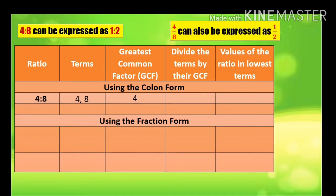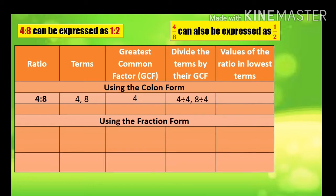Now we are going to divide the terms by their GCF. The terms are 4 and 8 and the GCF is 4. So it would be 4 divided by 4 and 8 divided by 4. The answer is 1 is to 2. That is the value of the ratio in lowest terms.